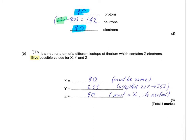Y/X thorium is a neutral atom of a different isotope of thorium which contains Z electrons. Give possible values for X, Y and Z.